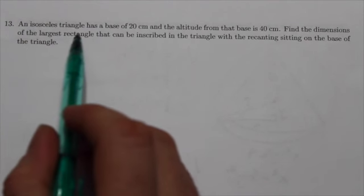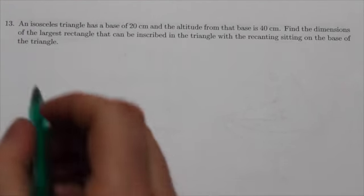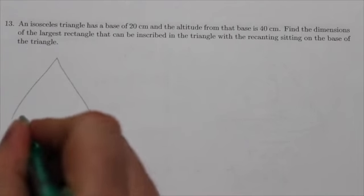All right, question 13. An isosceles triangle has a base of 20 centimeters and an altitude of 40. Okay,